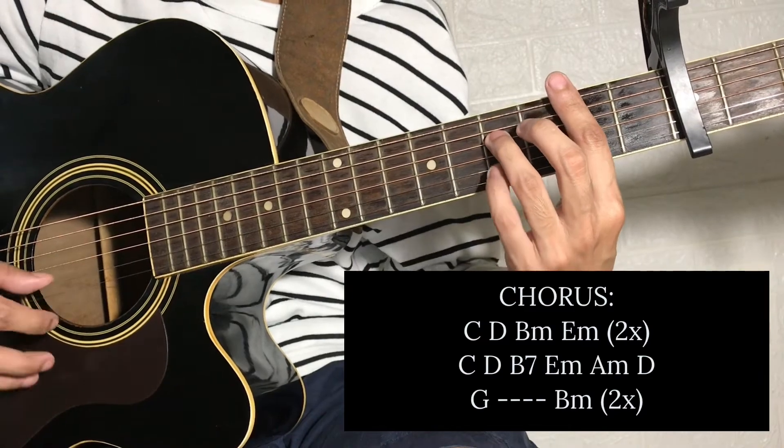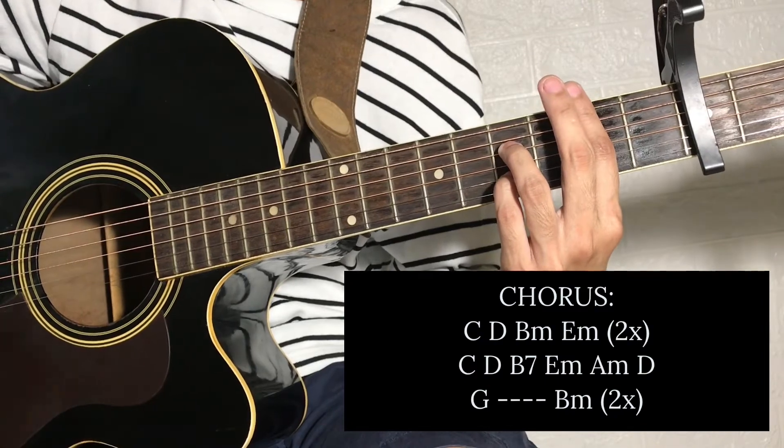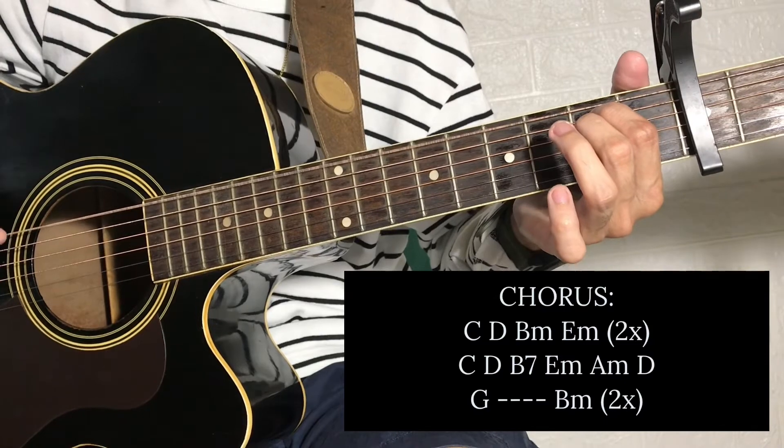And then little finger mo 2nd string 4th fret. B7. Next is E minor. Next is A minor.